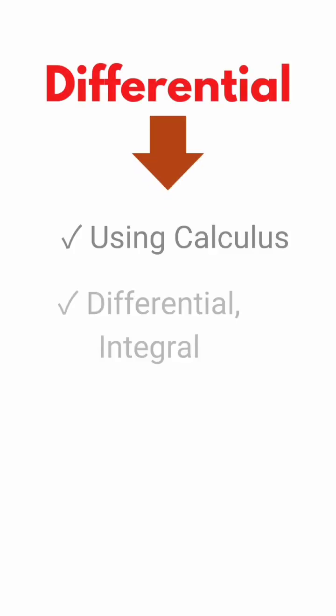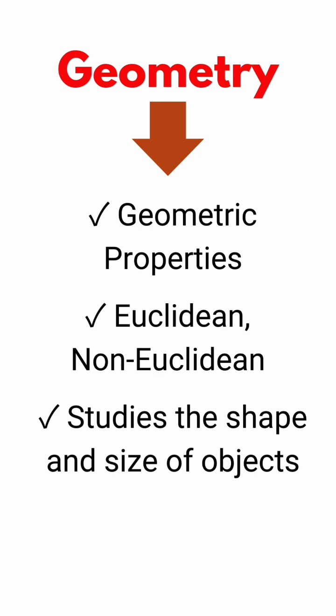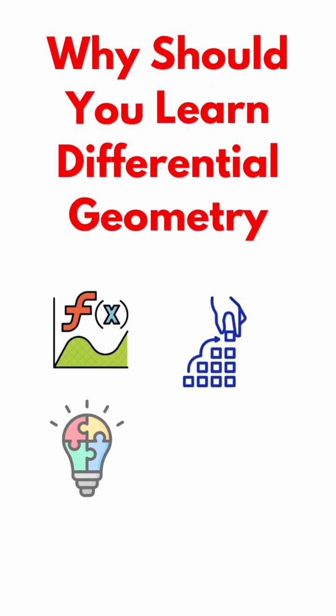Differential geometry consists of two words: differential, using calculus (differential and integral) to study surfaces, and geometry. Primarily, you should learn non-Euclidean geometry to study shapes.